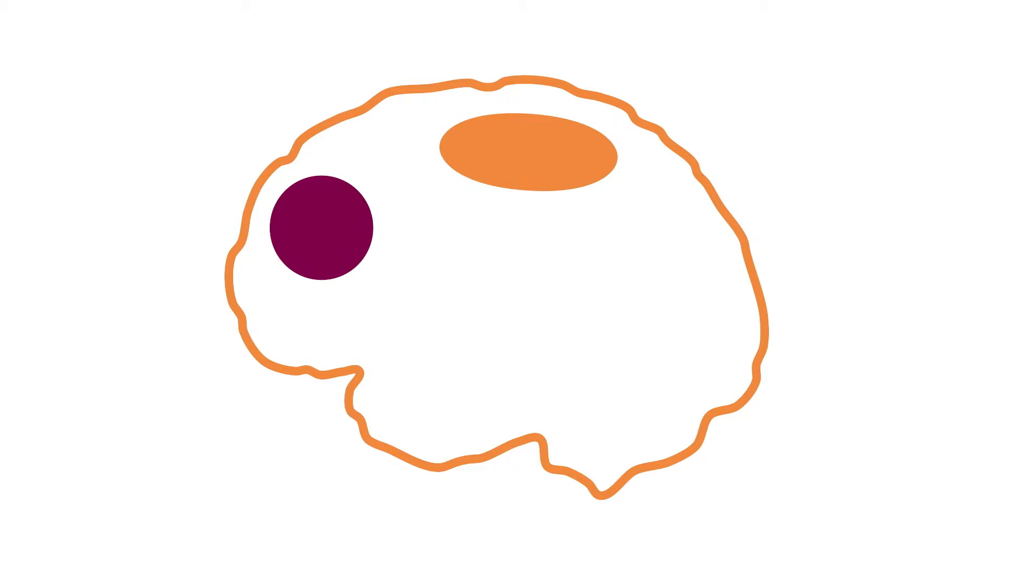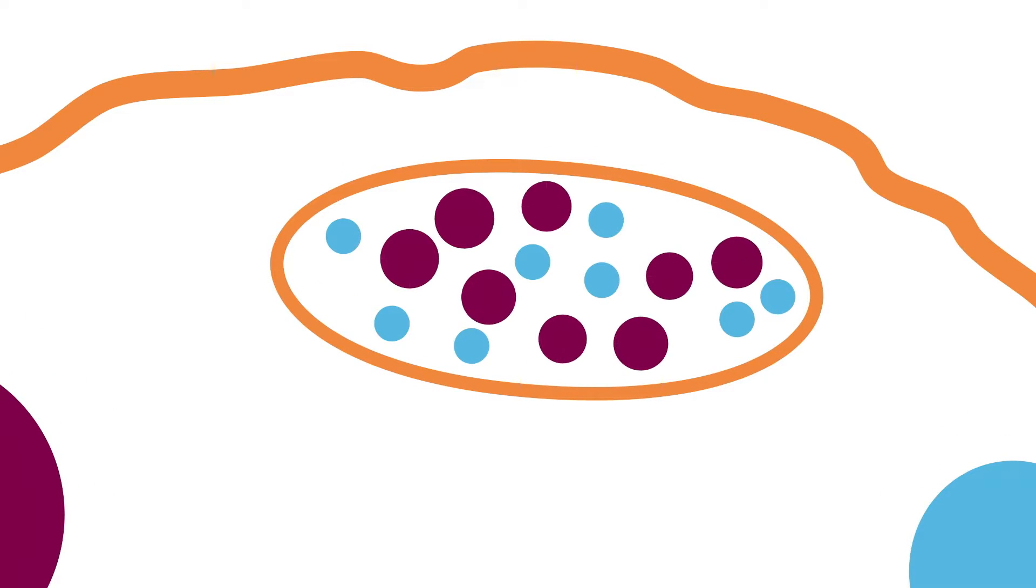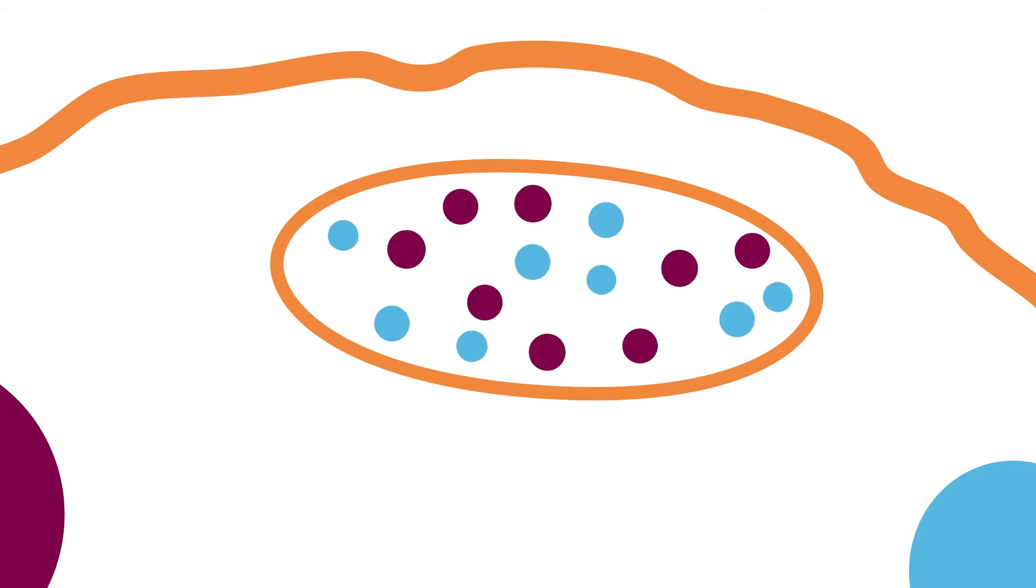When we are learning, processes of metabolism in certain brain areas intensify, which means increased blood circulation. The ratio of oxygen-rich blood and oxygen-poor blood changes.